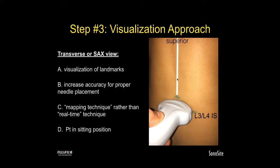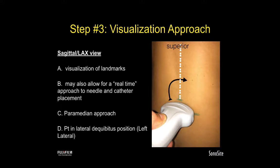The optimal position for the patient in the transverse scan technique is the sitting position. Another technique is the sagittal or long axis view, where the probe can be rotated to obtain a vertical scan just off or at the midline. This may also be a real-time approach for needle and catheter placement, congruent to a paramedian approach, with the midline obtained by tilting the probe beam. For this technique, the optimal patient position is the lateral decubitus position — if the practitioner is right-handed, it would be optimal to have the patient in the left lateral decubitus position.